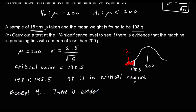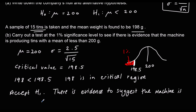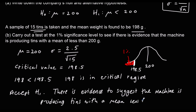There is evidence to suggest the machine is producing tins with a mean less than 200 grams.